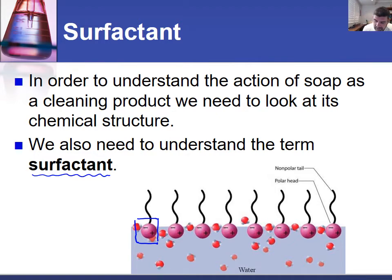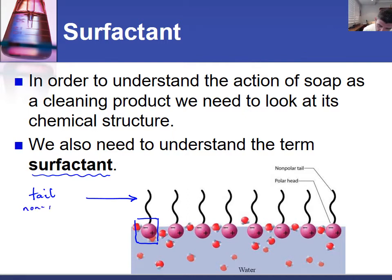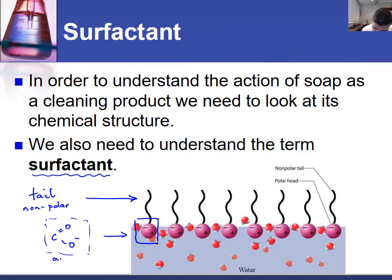In very simple terms, each soap molecule is made up of a tail, and the tail is made up of a series of carbon and hydrogen bonds, so therefore it's non-polar. The head, on the other hand, is in most cases the head of a carboxylic acid after the hydrogen has been removed, so it forms an anion. Being an anion, it is therefore able to attract polar molecules such as water molecules.